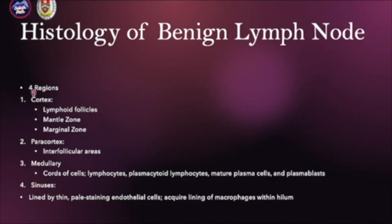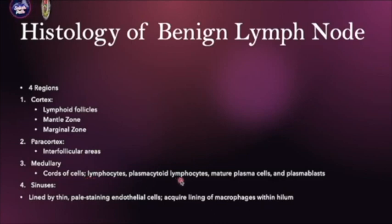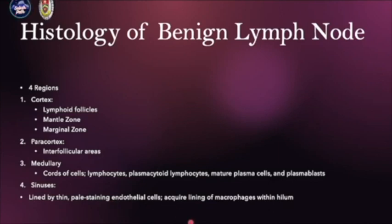On histology of benign lymph nodes, you have four regions. You have a cortex composed of lymphoid follicles, mantle zone, and marginal zone. You have a paracortex where you have the interfollicular areas. You have the medullary region, which has cords of lymphocytes, plasma cytoid lymphocytes, mature plasma cells, and plasmablasts. And you have sinuses lined by thin, pale-staining endothelial cells with an acquired lining of macrophages within the hilum.